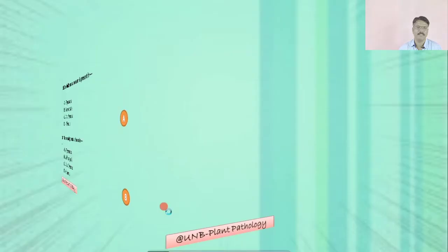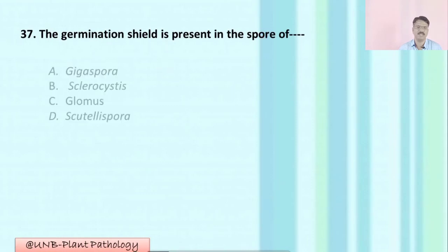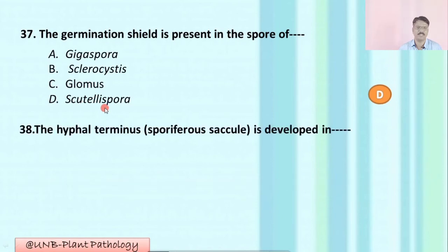Question number thirty-seven: The germination shield is present in the spore of which mycorrhizal genus? A: Gigaspora; B: Sclerocystis; C: Acaulospora; D: Glomus. The correct option is A: Gigaspora.